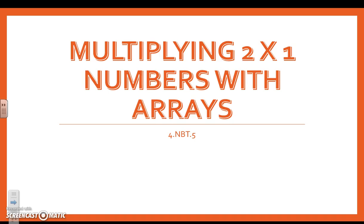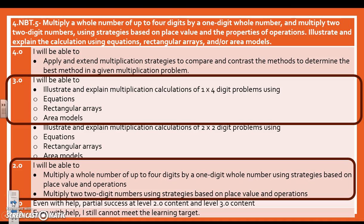Today's lesson is on multiplying two-digit by one-digit numbers with arrays. Here is our learning scale. We're going to be focusing on level 3 and level 2. Notice on level 3 we're only going to be talking about one-digit by four-digit problems. And on level 2 we're going to also be looking at place value and strategies.